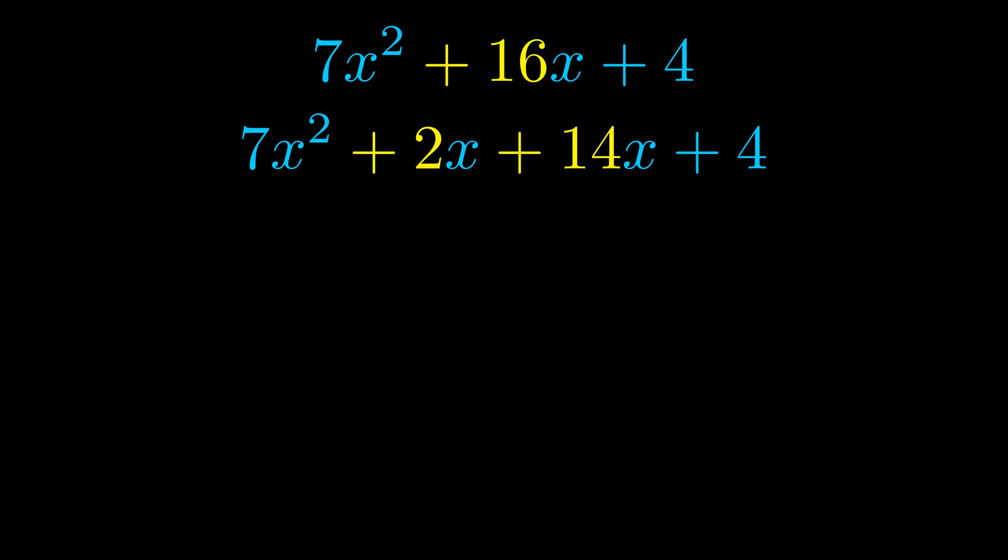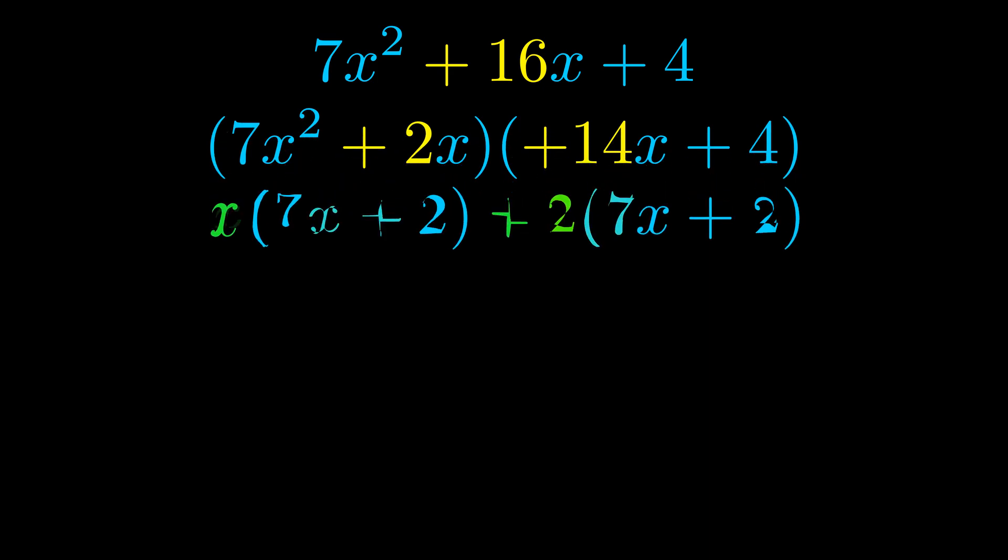Once we've done this, we put parentheses around the first term and the last term. We do that so we can take the greatest common factor out of both terms. We can see the greatest common factor is now outside in green.